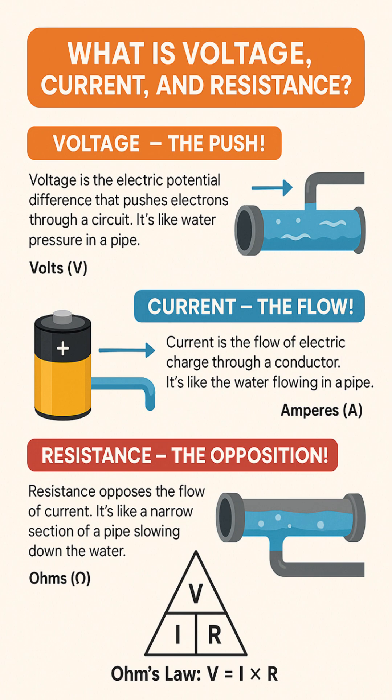Lastly, there is resistance, which acts as the opposition. Resistance is a property that opposes or slows down the flow of current. Imagine a narrow section in our water pipe — this restriction makes it harder for the water to flow, effectively slowing it down. This is exactly what resistance does to an electric current. We measure resistance in units called ohms, which are represented by the Greek letter omega.